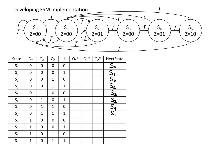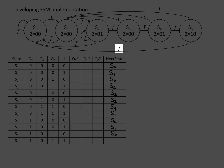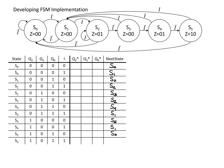If we're in S4 and the input is 0, we go to S5, and if the input is 1, we go back to S1. If we're in S5 and the input is 0, we go back to S0, and if the input is 1, we go back to S1. Now we can fill in the state encoding for these. Since we're using a binary encoding, it's fairly straightforward: 000 for S0, 001 for S1, and we continue this all the way down.